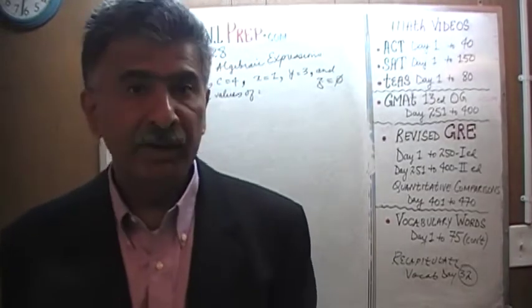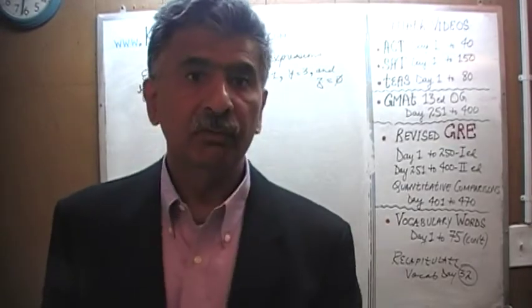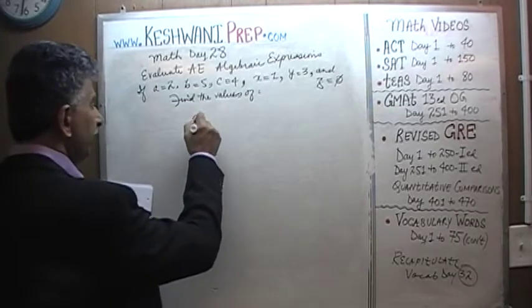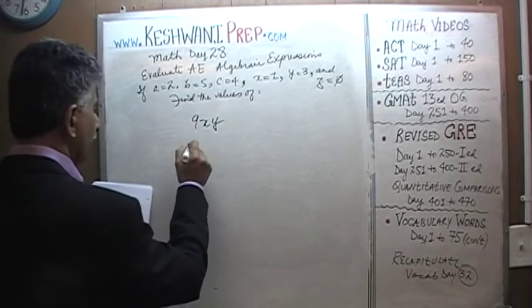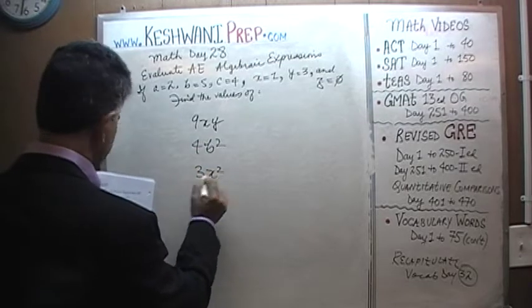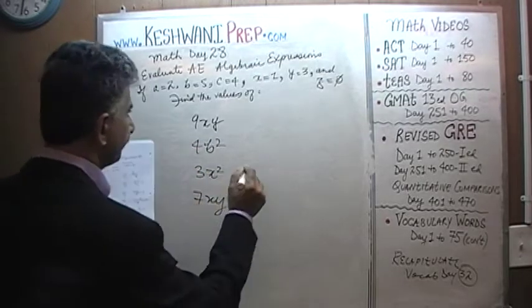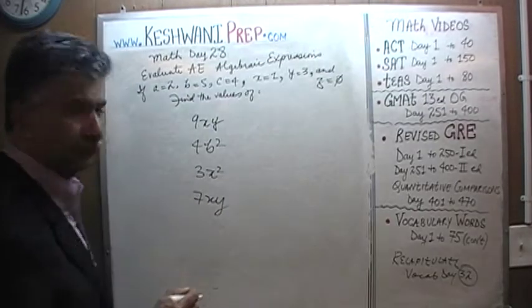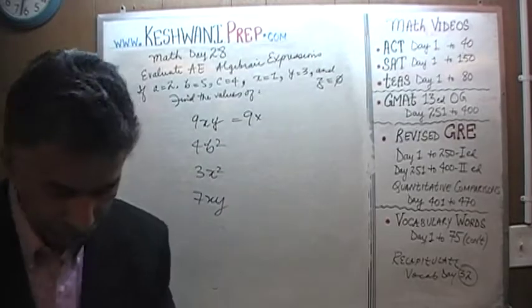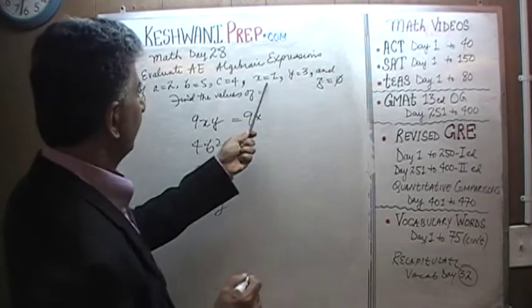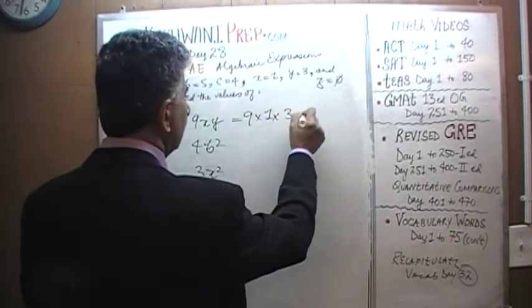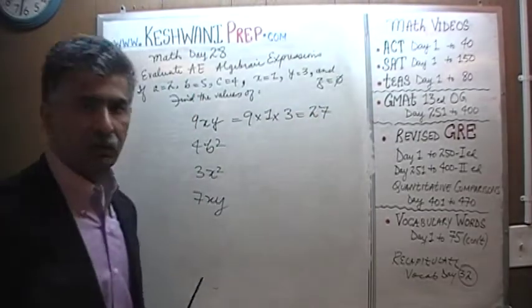Based on these values of the variables, the question is, what are the values of the following expressions? Here is number 1. You should do them with me. 9XY. 9 times X times Y. X is 1, times Y. Y is 3. It turns out that 9XY should equal 27.